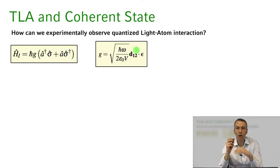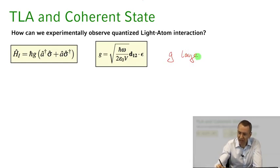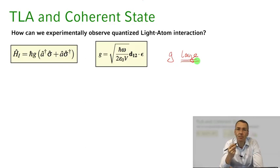What we really want, if we want to study the dynamics of a single atom with a single mode radiation field, is for G to be as large as we can get it. There are detrimental processes that will hinder us from observing the coherent dynamics induced by this coupling, so we want G to be really strong and really fast.